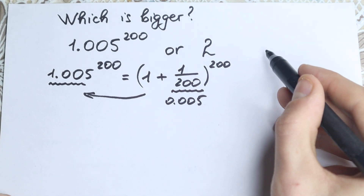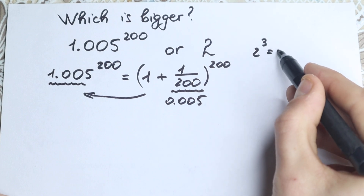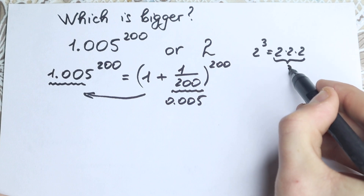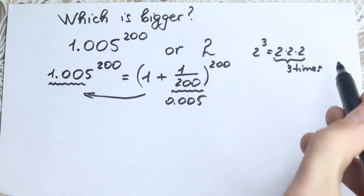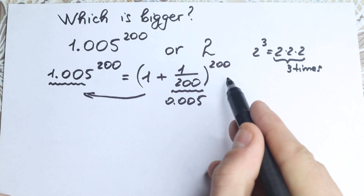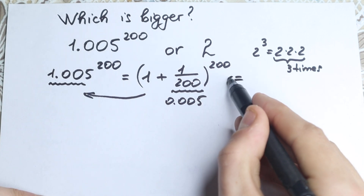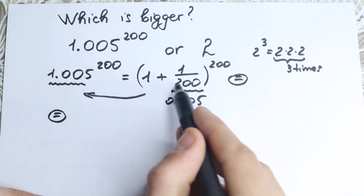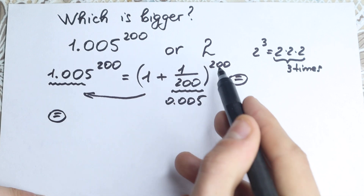What we're going to do next? If you know, for example, 2 cubed equals 2 times 2 times 2 — three times, we multiply 2 by itself. Right here we have the exponent 200. So let's write the expression as a product. We multiply this expression by itself 200 times.